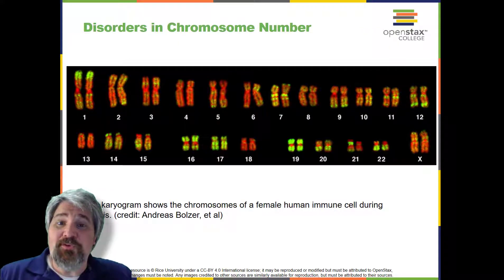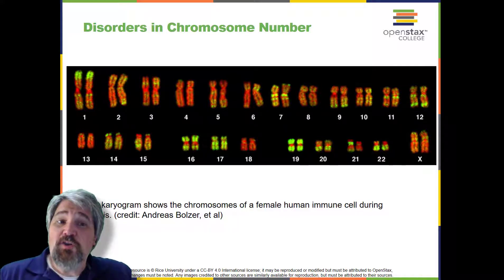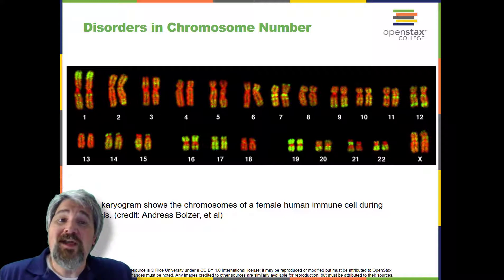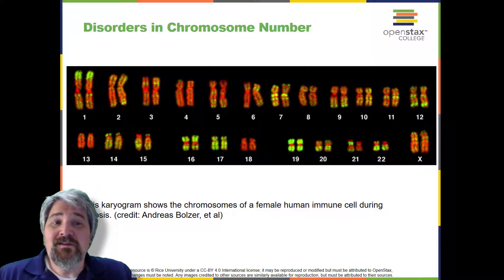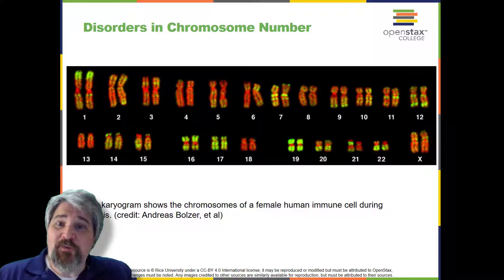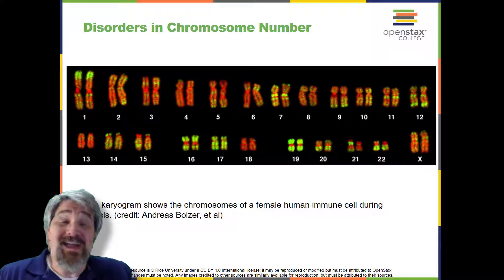Inherited disorders can arise when chromosomes behave abnormally during meiosis. Chromosome disorders can be divided into two categories: abnormalities in chromosome number, and chromosome structural rearrangements. Because even small segments of chromosomes can span many genes, chromosomal disorders are characteristically dramatic and often fatal.